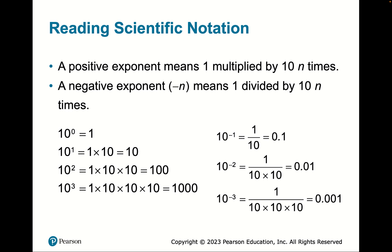Reading scientific notation in base 10: anything raised to the zero power — except zero itself — is one. The first unit is the base unit, 1 through 9. 10 to the first is 10; 10 to the second is 100, and so on. Negative exponents: 10 to the minus 1 is 1 over 10; 10 to the minus 2 is 1 over 100, or 0.01. To the right of the decimal point are negative exponents; to the left of the base unit are positive exponents.